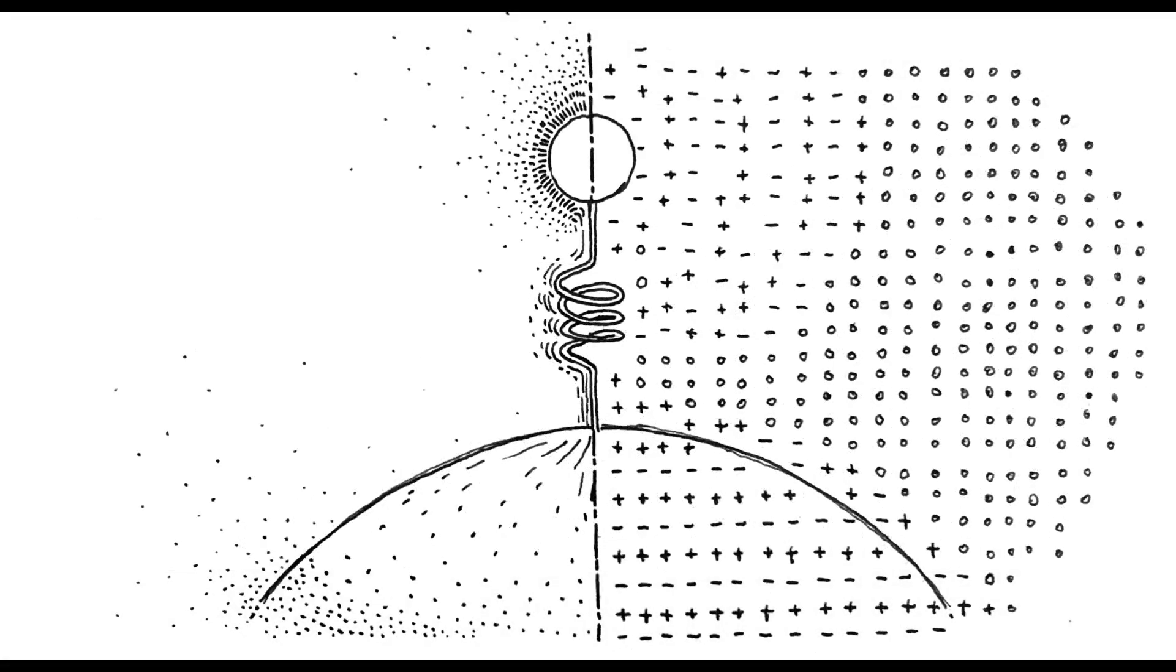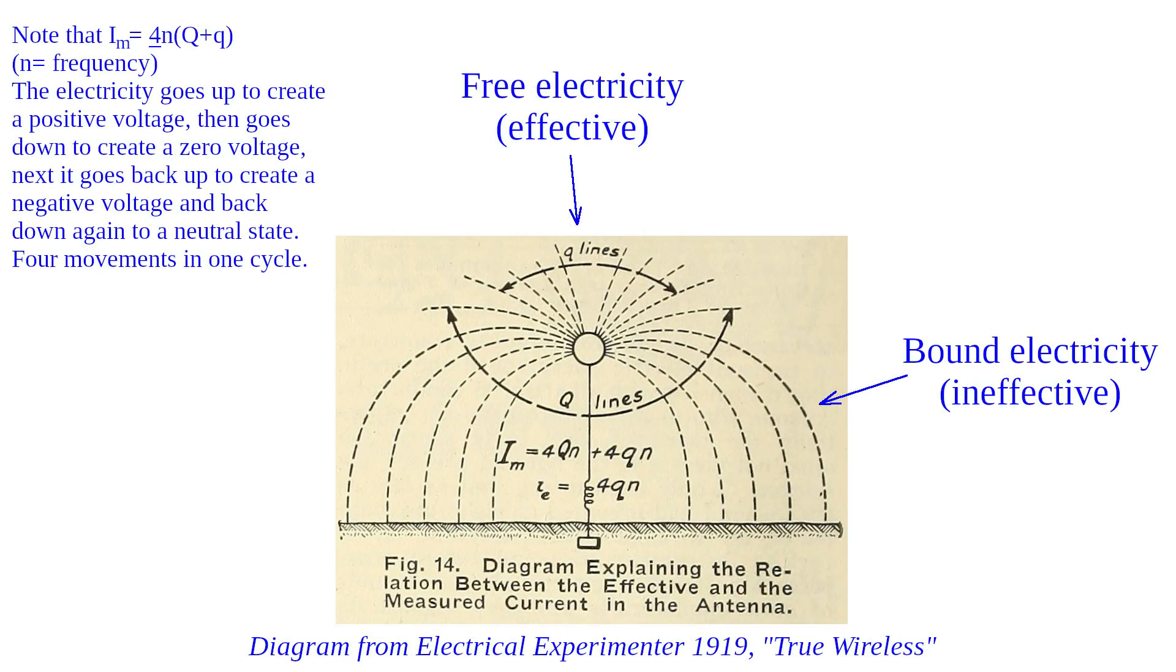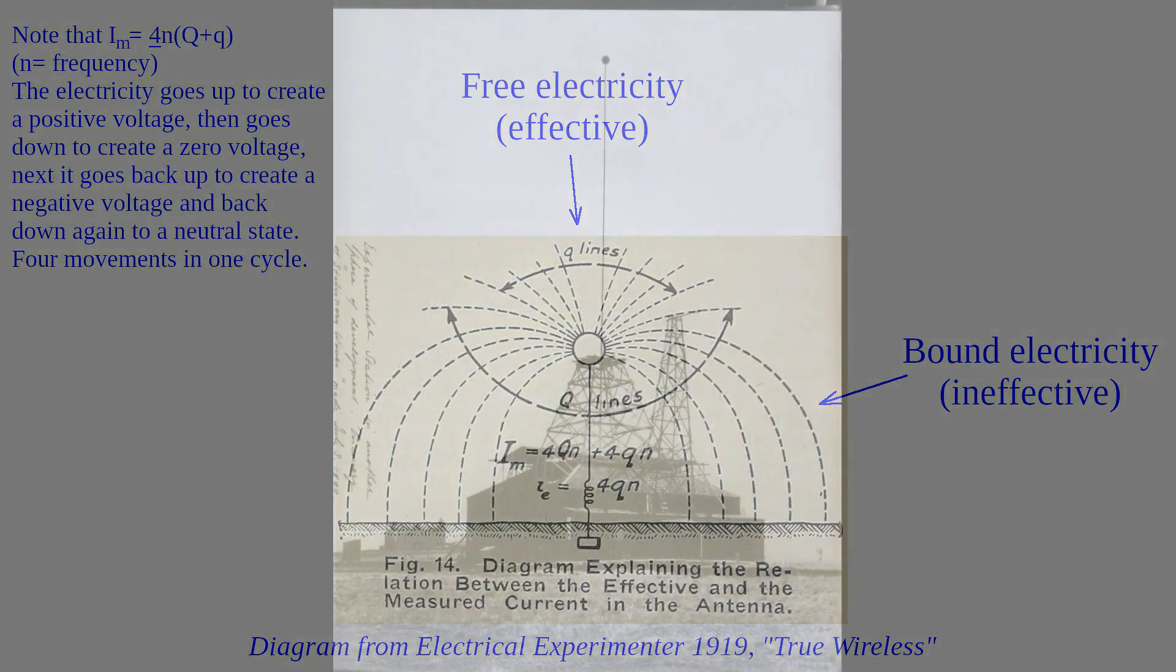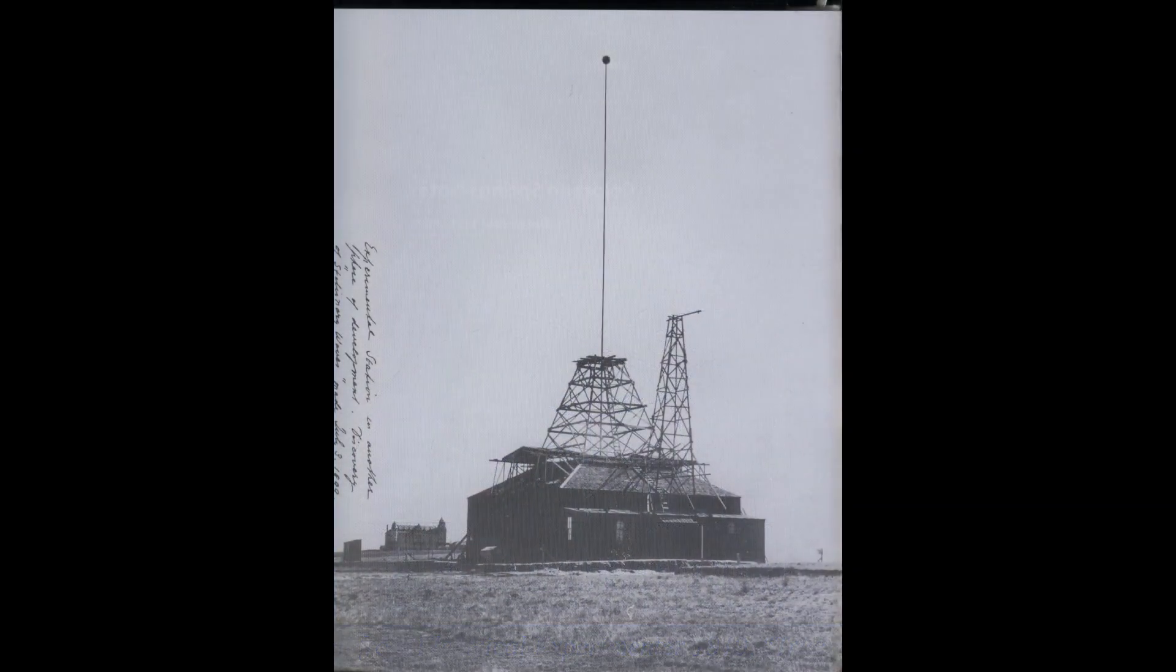So if you have a Tesla coil with one end of its secondary grounded, when we switch it on, it will attract this medium. But as long as it is on, most of the medium will stay around the coil. According to Tesla, only a small portion, what he calls free electricity, moves in and out of the Earth. This portion can be increased by raising the top load.